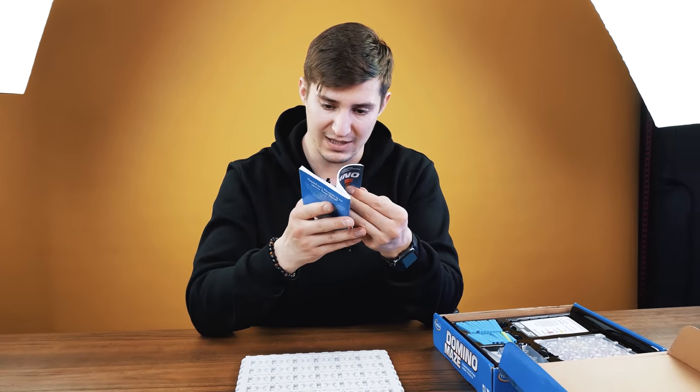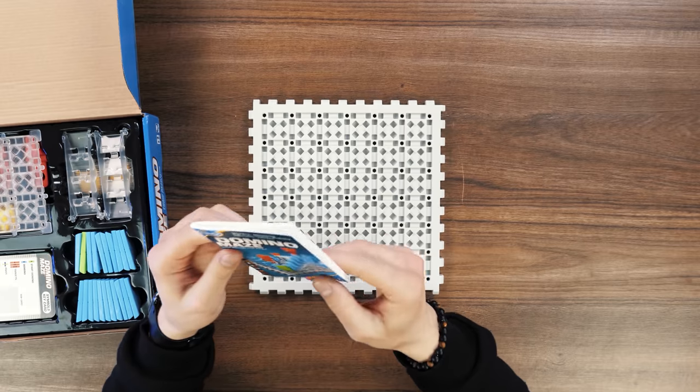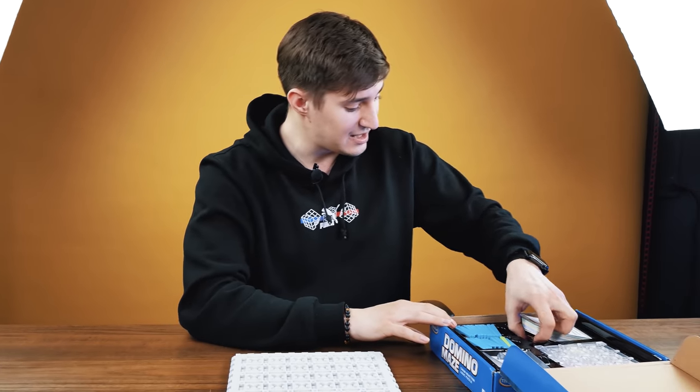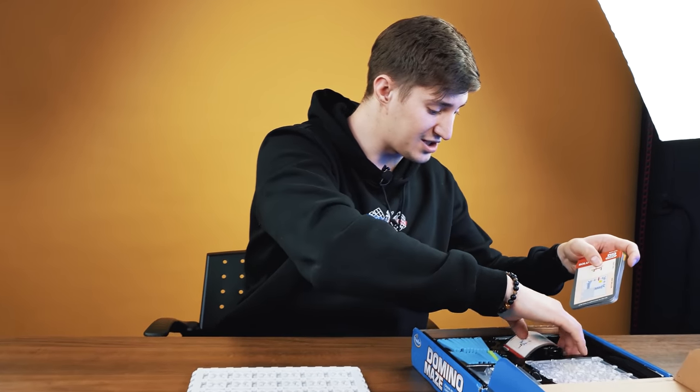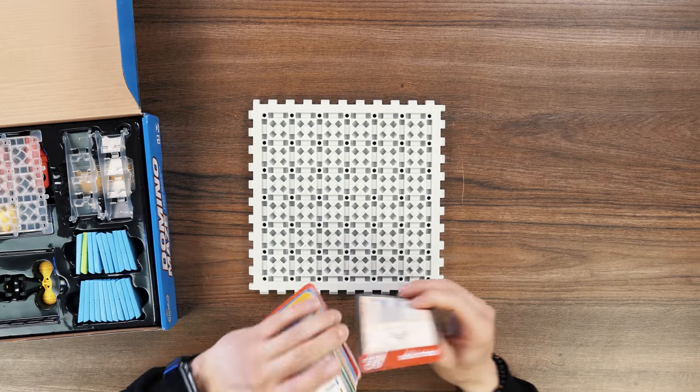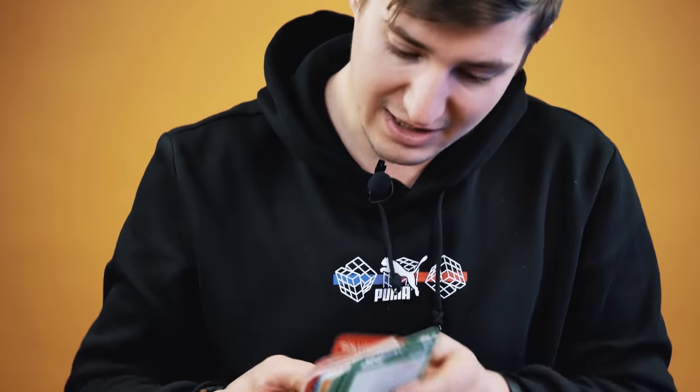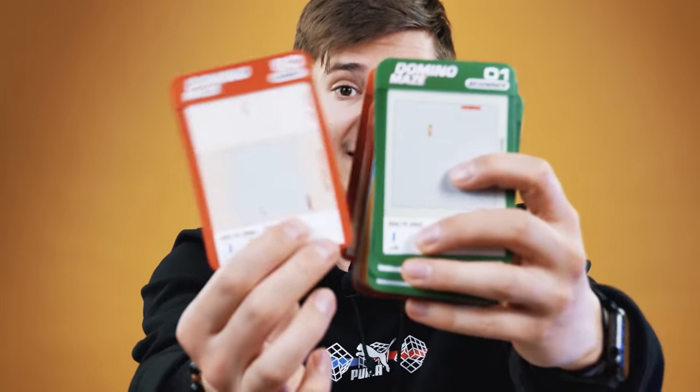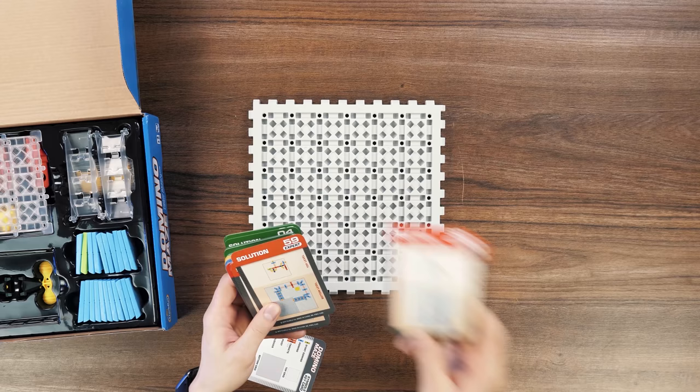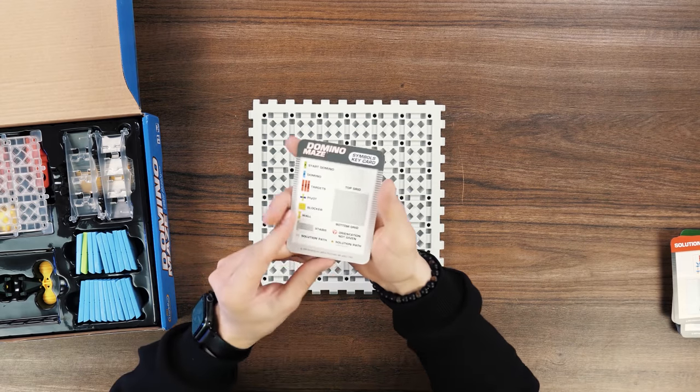Naturally, all this is indicated here in a super detailed way in the instructions, but we don't need it. Therefore, we immediately get the task. Look what awaits us. There are actually 60 of them here. 60. Here, just from the first puzzle and to the 60s. Interesting. First, let's see what we basically have here in the kit.